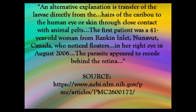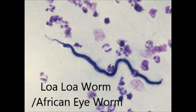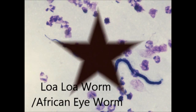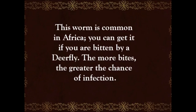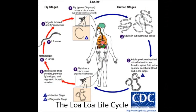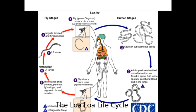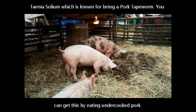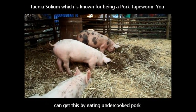Next is the Loa loa worm, also known as the African eye worm. This worm is common in Africa and you can get it when bitten by a deer fly. Here is an image of its life cycle. Next is Taenia solium, also known as the pork tapeworm — you get this from eating undercooked pork.